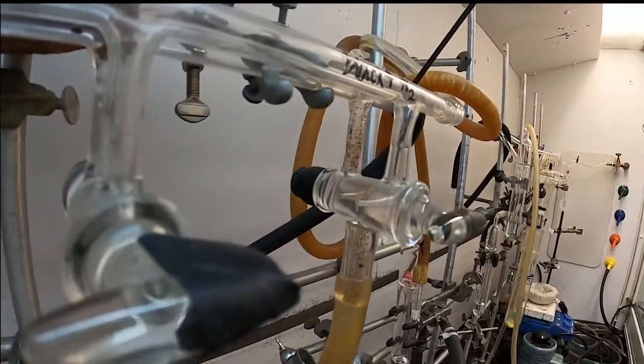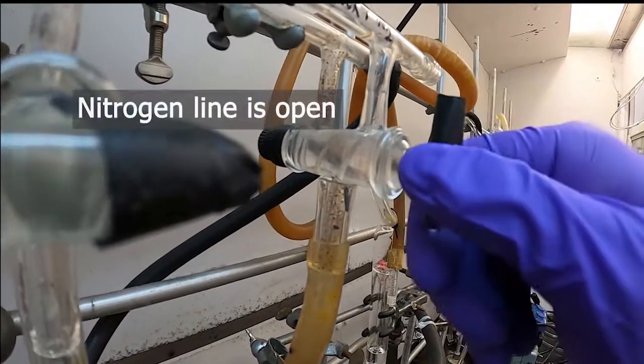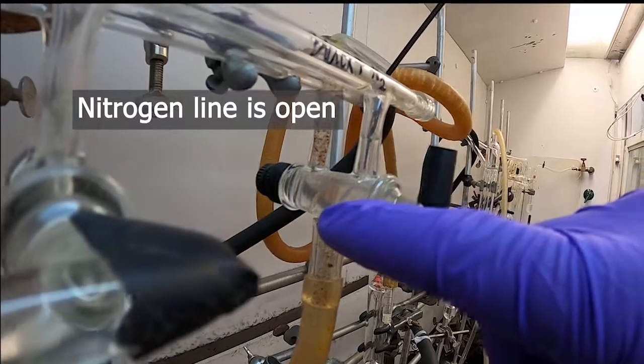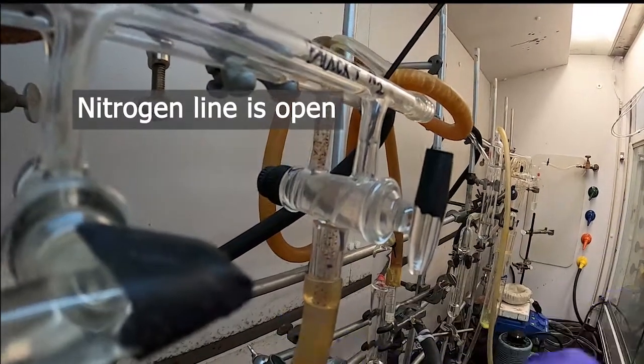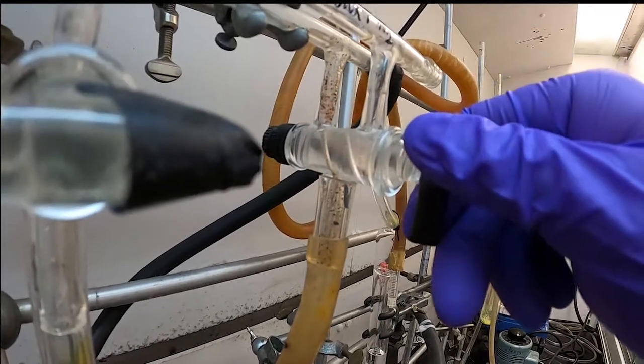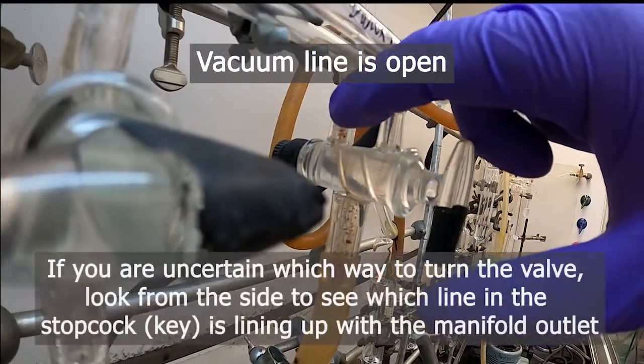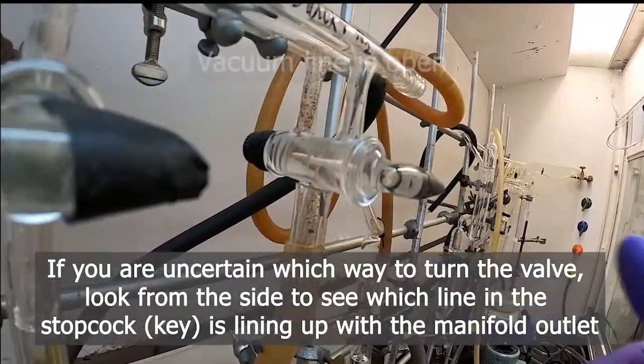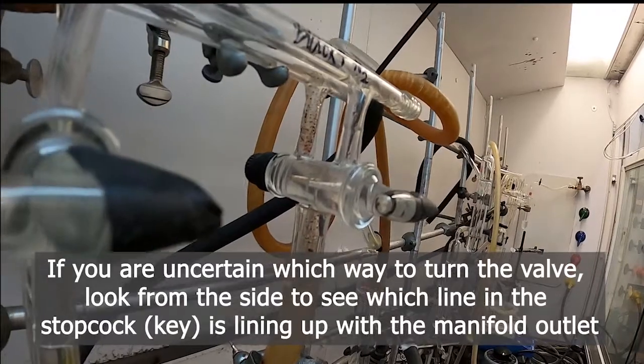These stoppers work differently. So in this case, up connects the nitrogen line through the diagonal portion of the stopcock and then to the tube. And then if you turn the opposite direction, the rear portion, so the vacuum line is then connected to the tube. And then horizontal is off position for both.